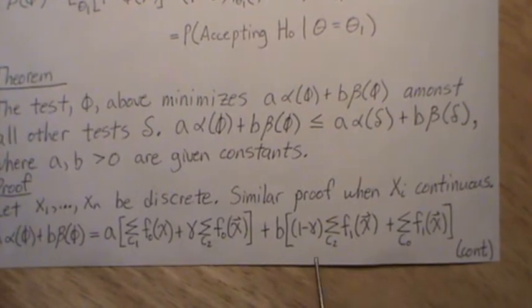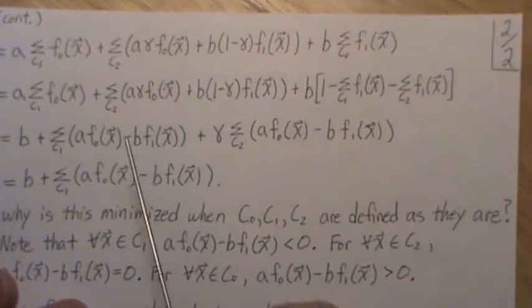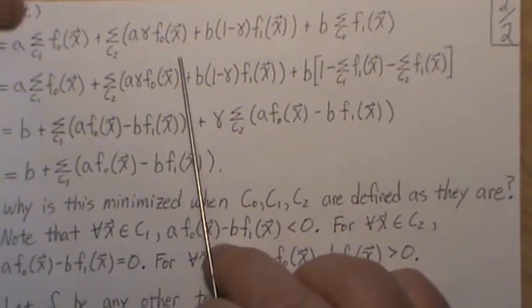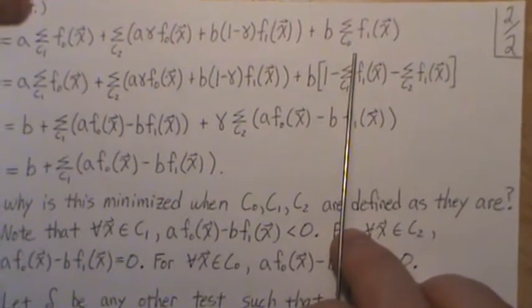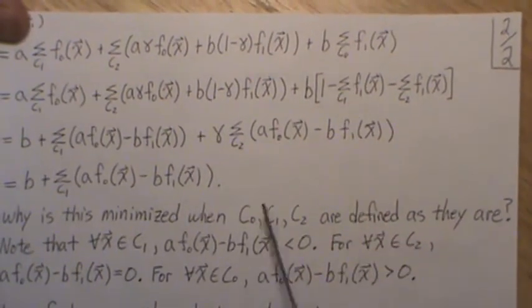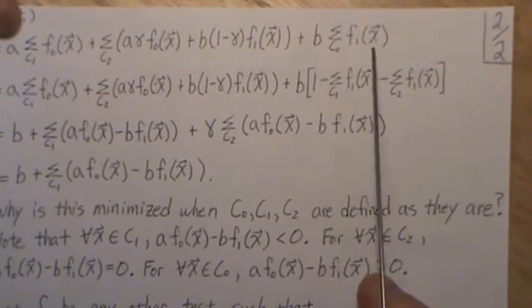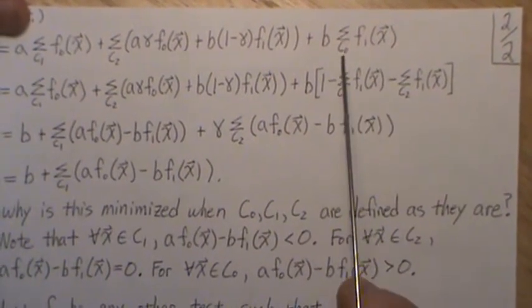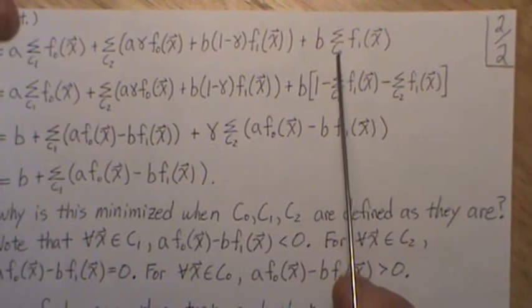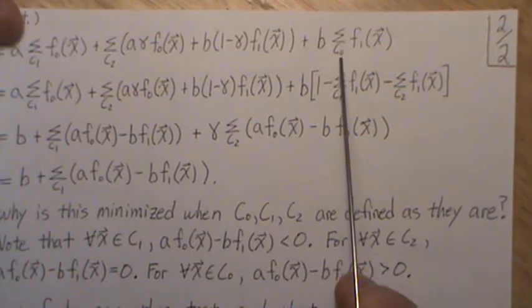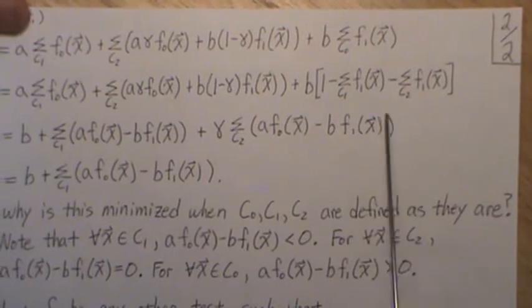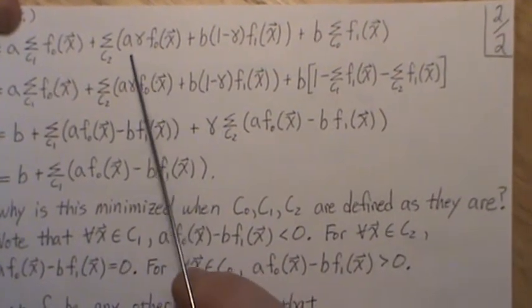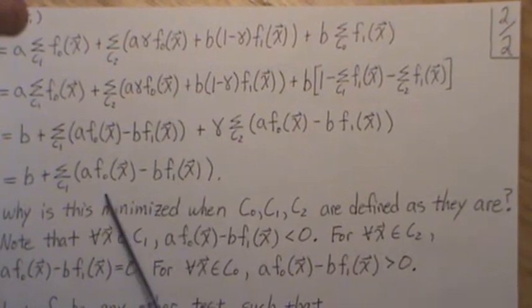Next, since we're summing over C2, we're going to combine these pieces into one summation. Then this right here, since C0, C1, and C2 make up the whole sample space, we can take one minus the other. So this probability, remember it's probability because we're summing over the x's in this subspace. So it's one minus that we sum those values over C1 and C2. It's the opposite or the complement. Everything else just comes down.